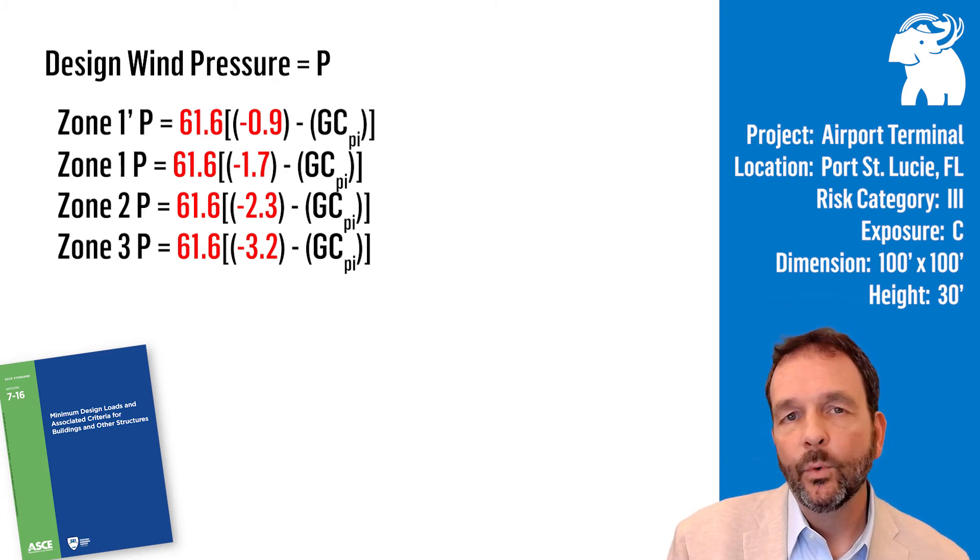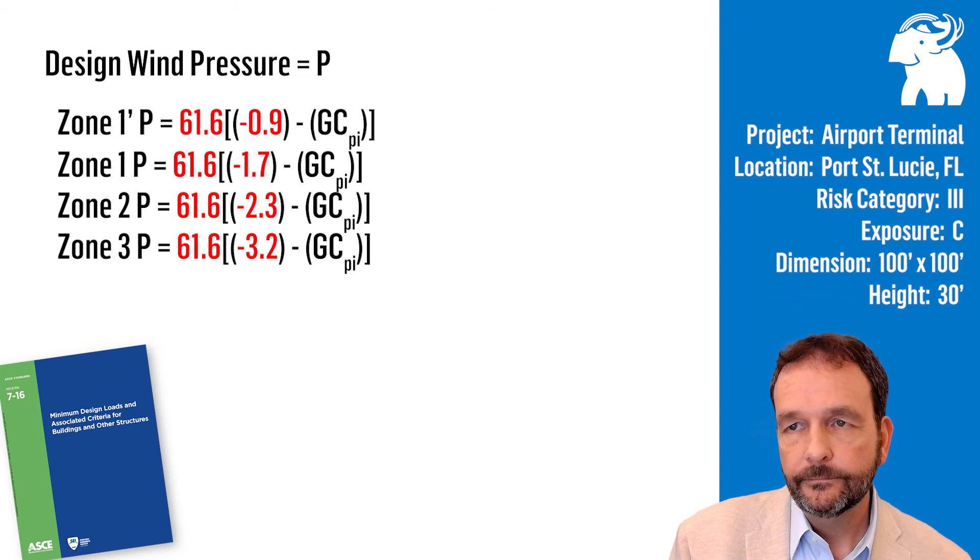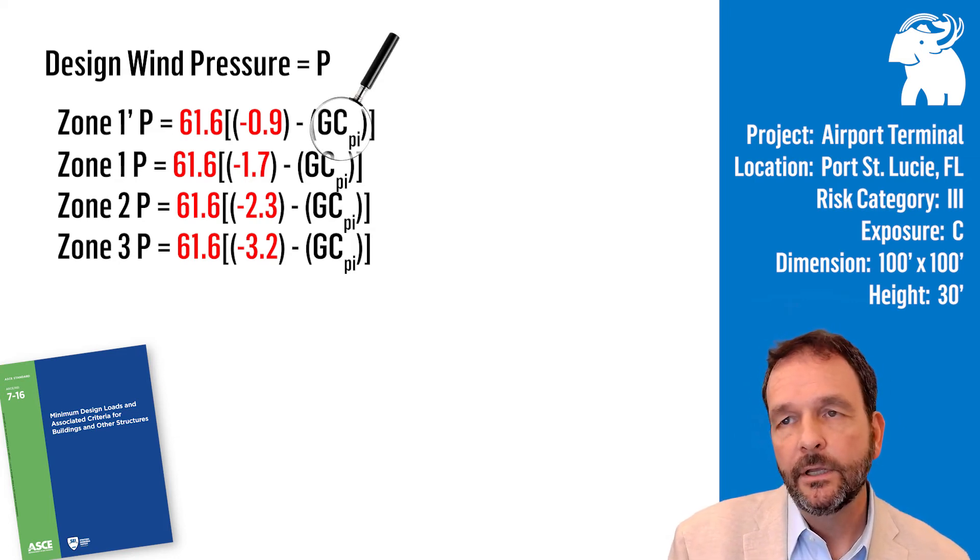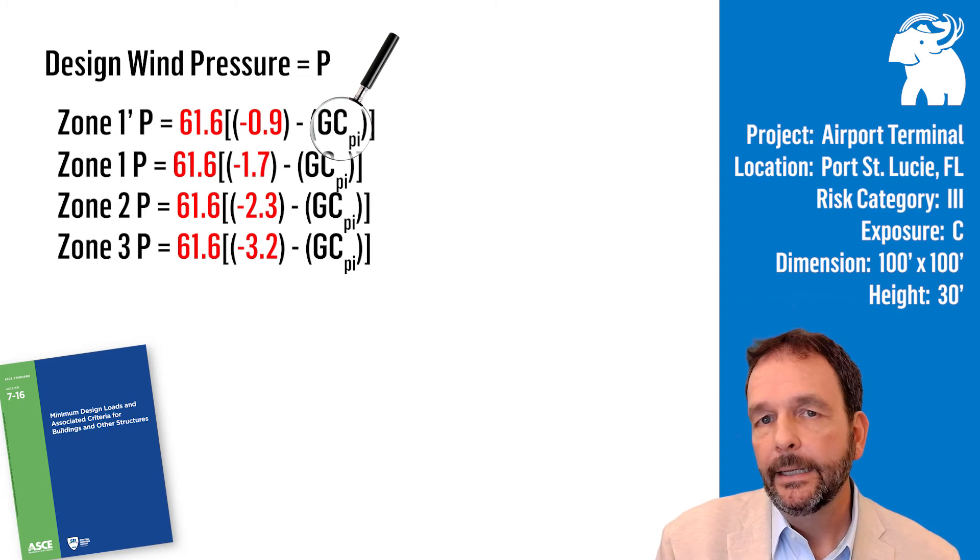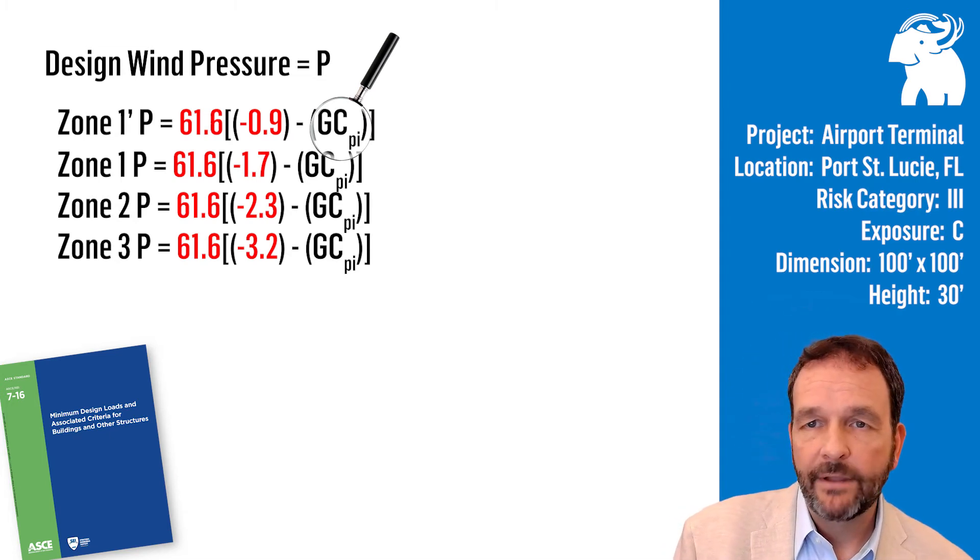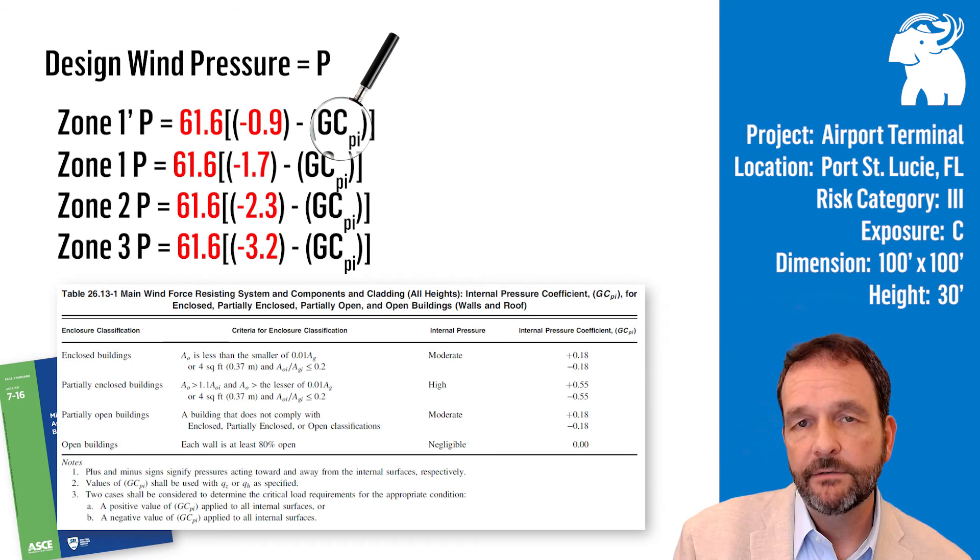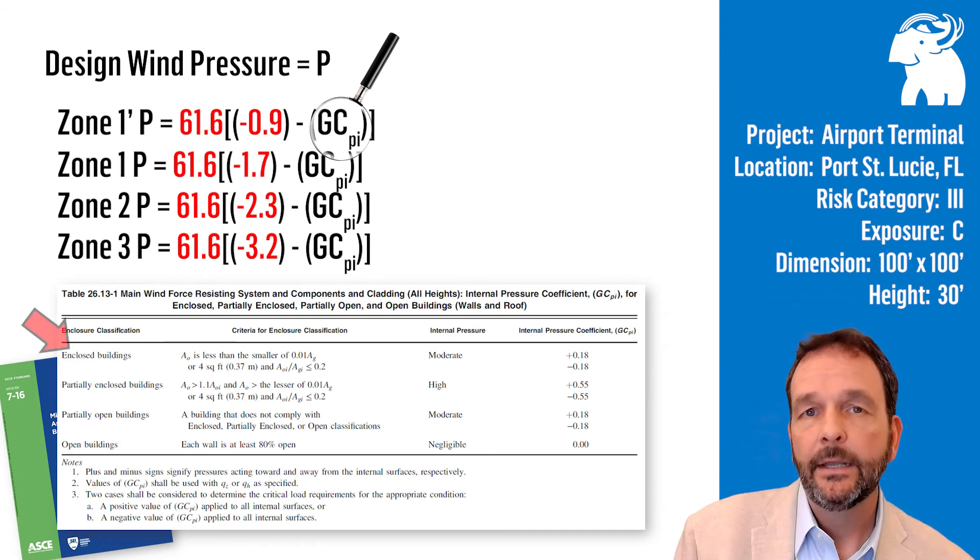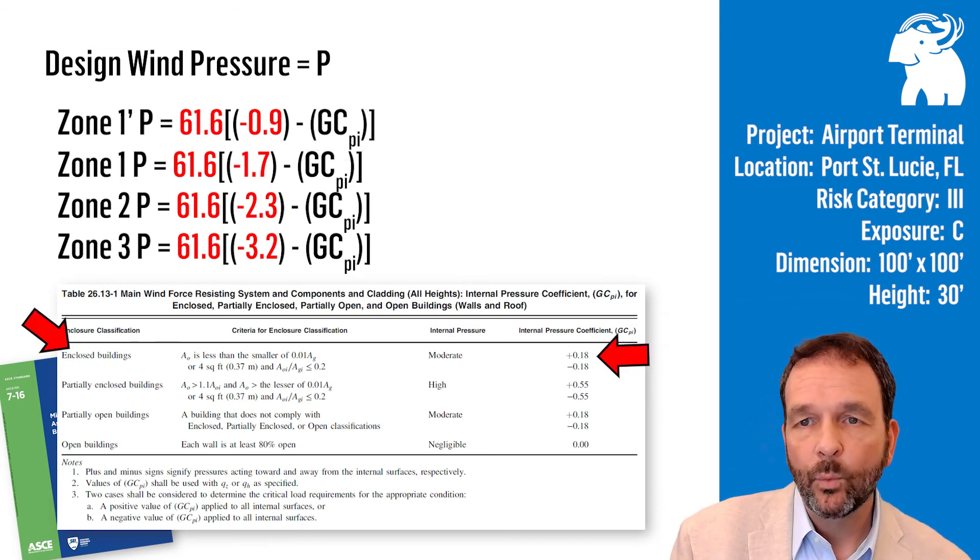The last variable we're looking for in our design pressure equation is the internal pressure coefficient, the GC sub PI. For our example, we're going to assume we have an enclosed building. It meets the definitions in ASCE 7-16 for an enclosed building. We can choose positive 0.18 for our GC sub PI.